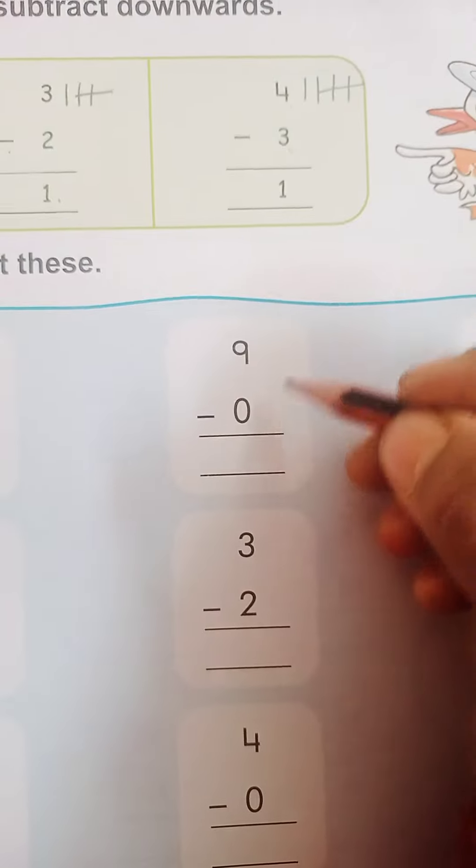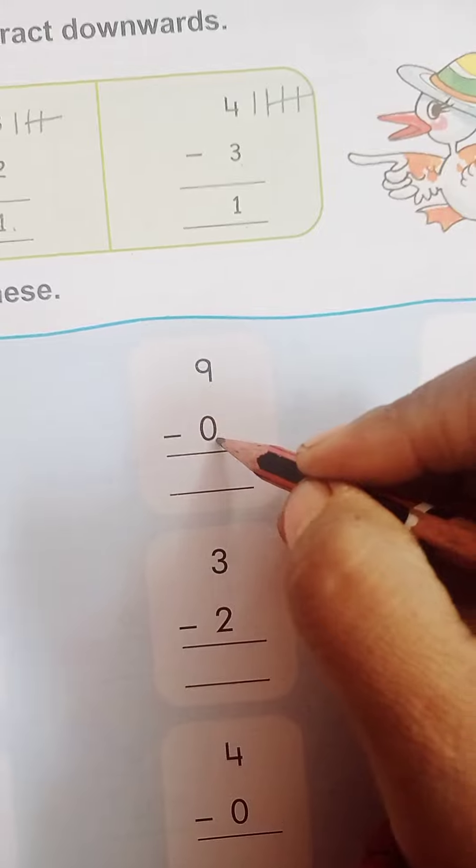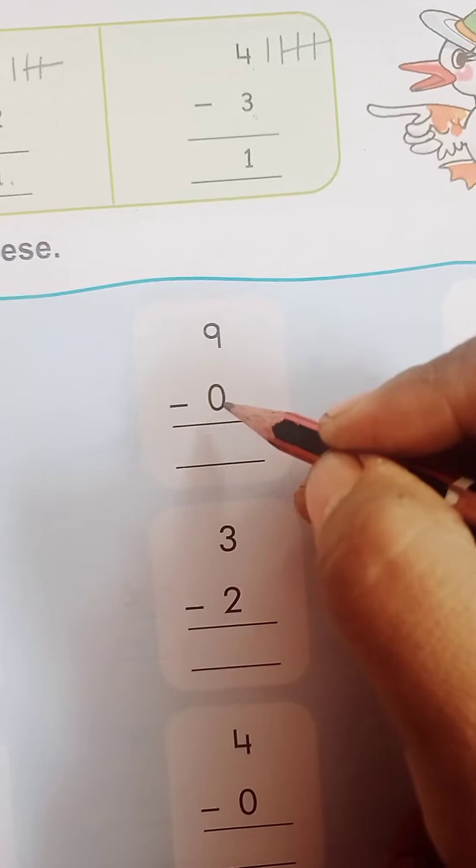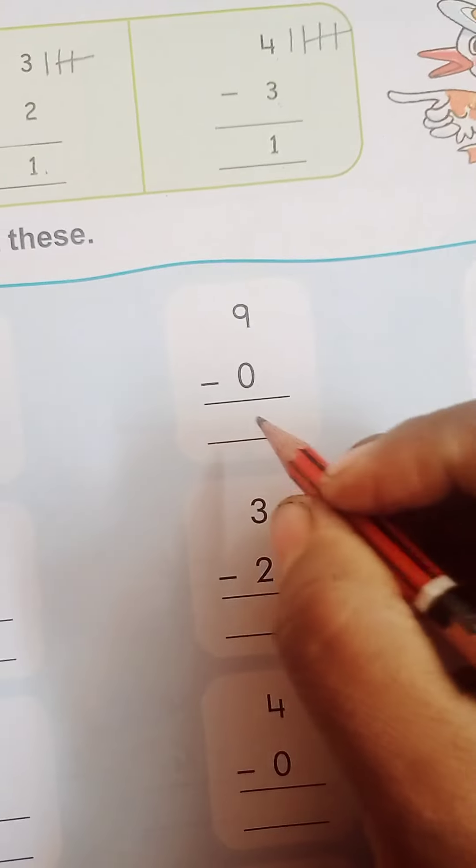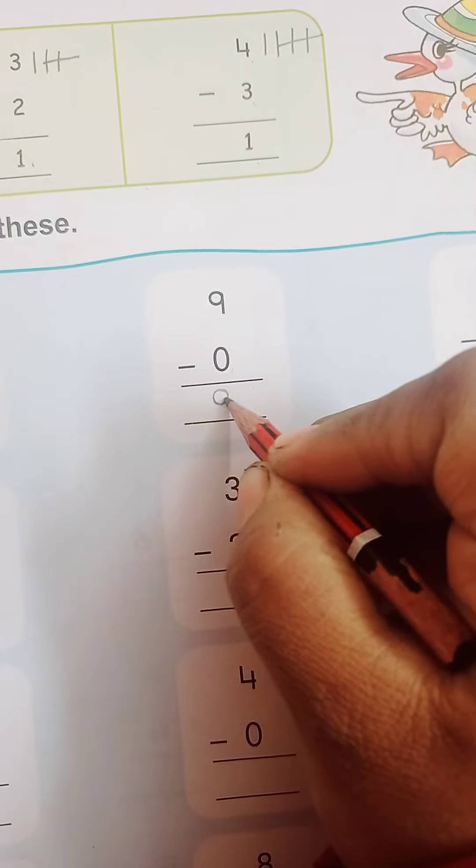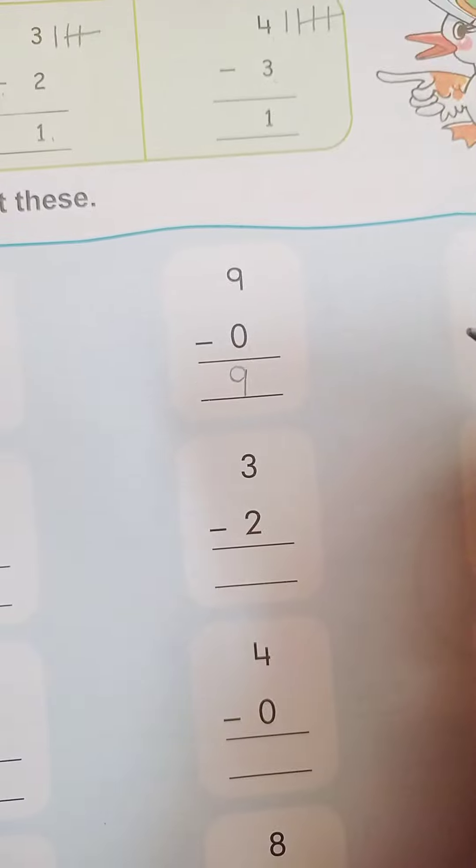And, now, 9 minus 0. 9 minus 0. Always remember, 0 se hum jis bhi number ko minus karenge, wo number uska answer hota hai. To, yaha simply kuch nahi karna hai, aapko direct answer likh dena hai, okay?